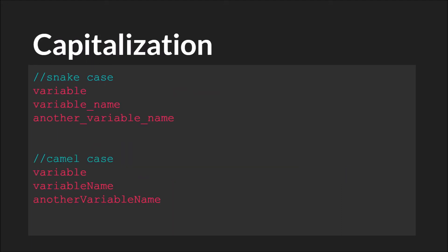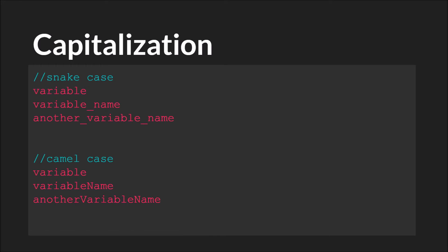Next, we have capitalization. There are really two main types. The first is snake_case, which uses no uppercase letters — it's all lowercase, and you put an underscore between each word, like variable_name or another_variable_name. camelCase is similar: it uses lowercase for the first word, then an uppercase letter for the first letter of each subsequent word, like variableName or anotherVariableName. I tend to use snake_case, especially in GML, and most GML functions are also in snake_case, so it helps your code be consistent. But both are very common.